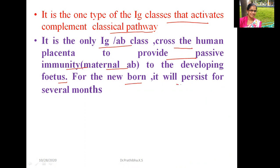This IgG-based protection for the newborn will persist for several months. IgG represents natural passive immunity — it naturally crosses the placenta from mother to newborn. This IgG immunoglobulin molecule is also known as the maternal antibody.